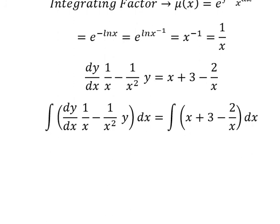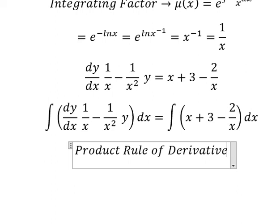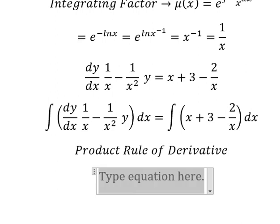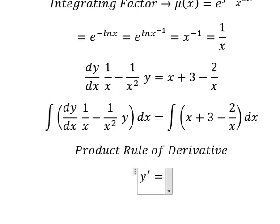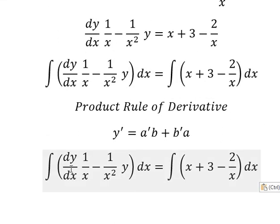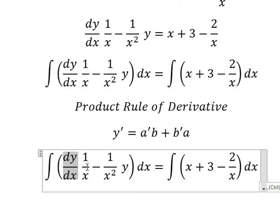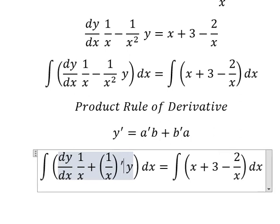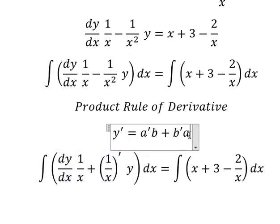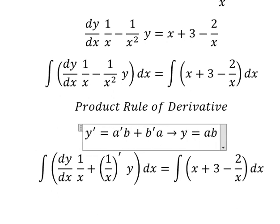Next we can use the product rule of the derivative. So we have first the derivative of y equals to first the derivative of a multiplied by b plus first the derivative of b multiplied by a. So the integration of this one we have y equals to ab.